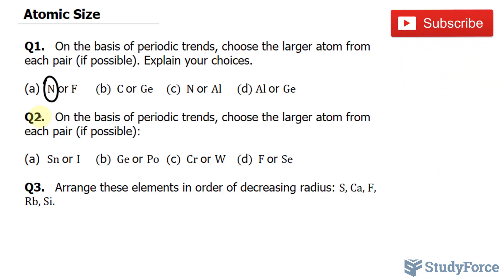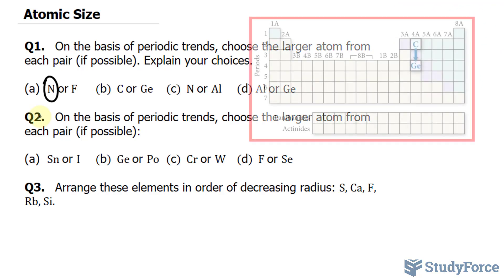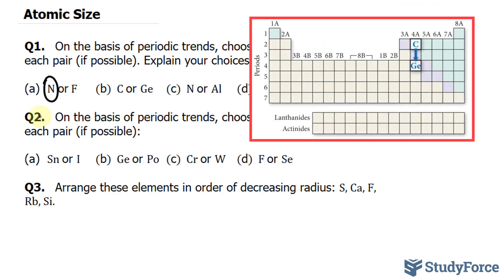Next, we move on to carbon versus germanium. Germanium atoms are larger than carbon atoms because as you trace the path between carbon and germanium on the periodic table, you move down a column.